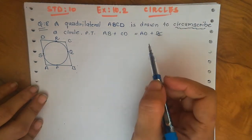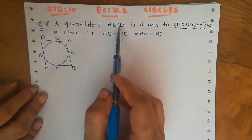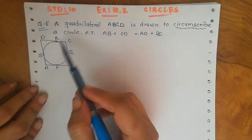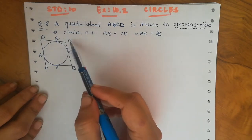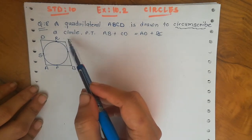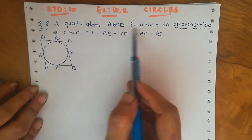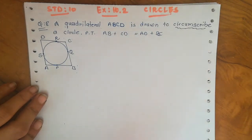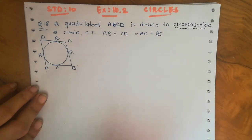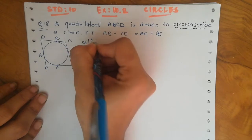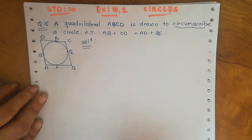People get confused with the word 'circumscribe.' If it were 'inscribe,' that would mean the quadrilateral ABCD is drawn inside the circle. But here it is 'circumscribe,' meaning the quadrilateral ABCD is drawn to circumscribe a circle — the circle is inside the quadrilateral.